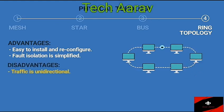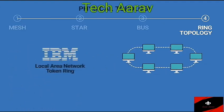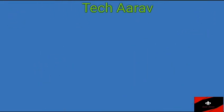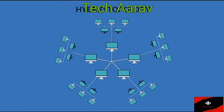Disadvantages of ring topology: Traffic is unidirectional. A break in the ring can disable the entire network. Ring topology was prevalent when IBM introduced its local area network token ring. Today, the need for higher-speed LANs has made this topology less popular. Hybrid topology: A network can be hybrid. For example, we can have a main star topology with each branch connecting several stations in a bus topology.